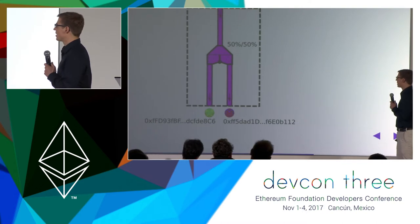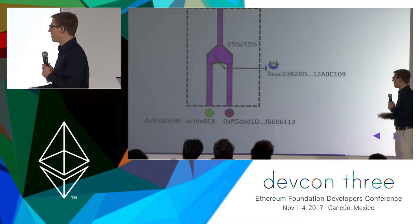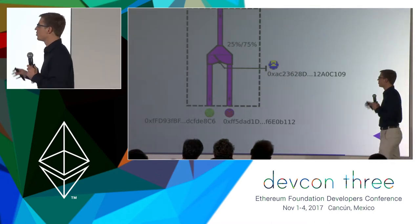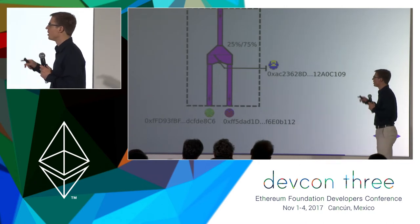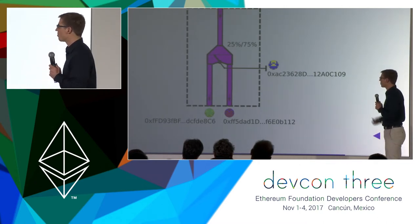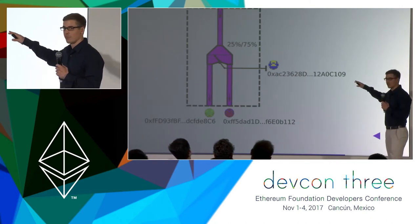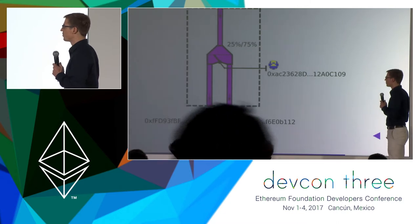We can add a lever to this splitter, which allows the account on the right to modify the splitting ratio. Currently it's set to 25/74, but at any point in time, the person behind the account on the right side can modify this ratio.